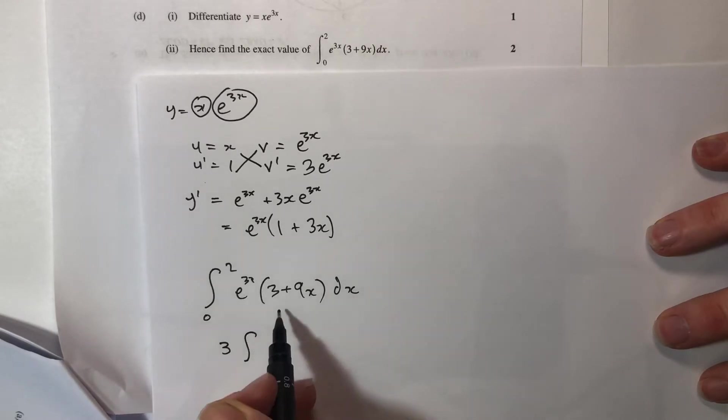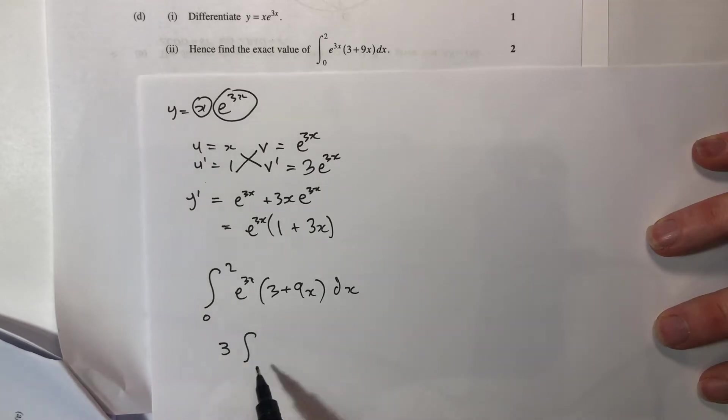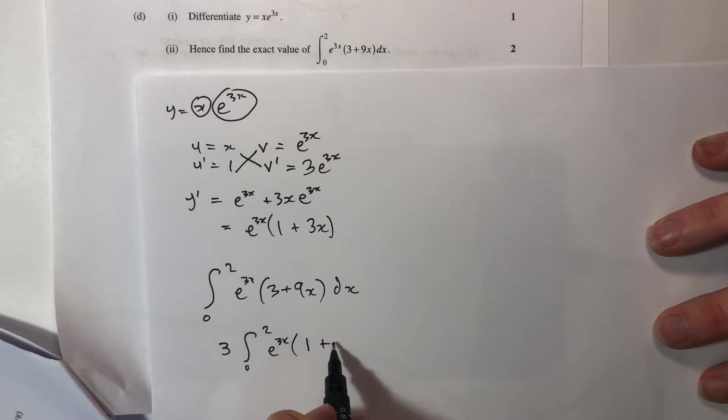I'm going to pull that three out the front because I can factorize it out. So 3 times the integral from 0 to 2 of e to the 3x times (1 plus 3x) dx, which is what we had above.